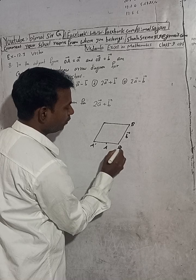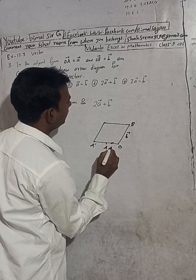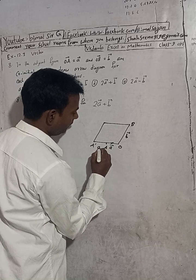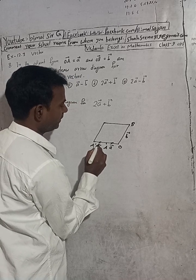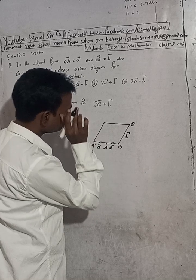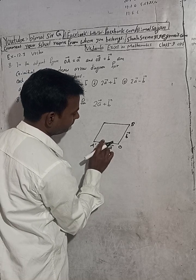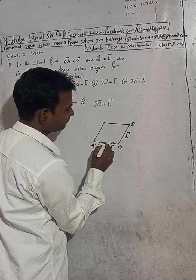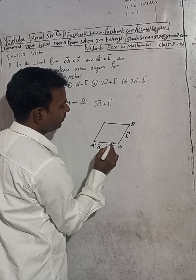Suppose OA vector equals A vector. And AA-dash vector is also equal to A vector in the same direction. So OA vector is equal to A vector.